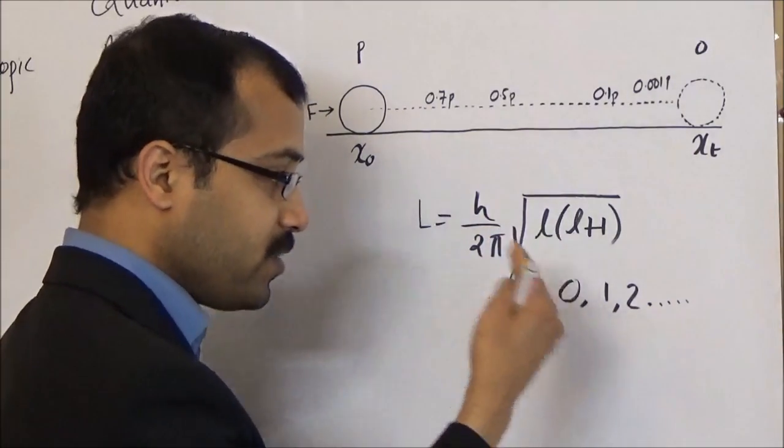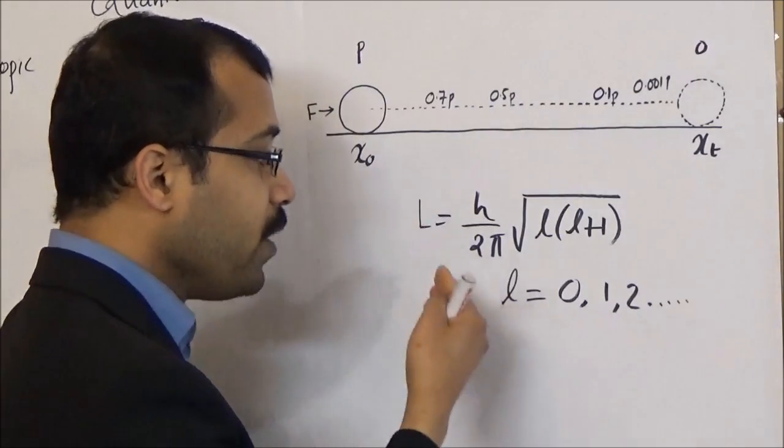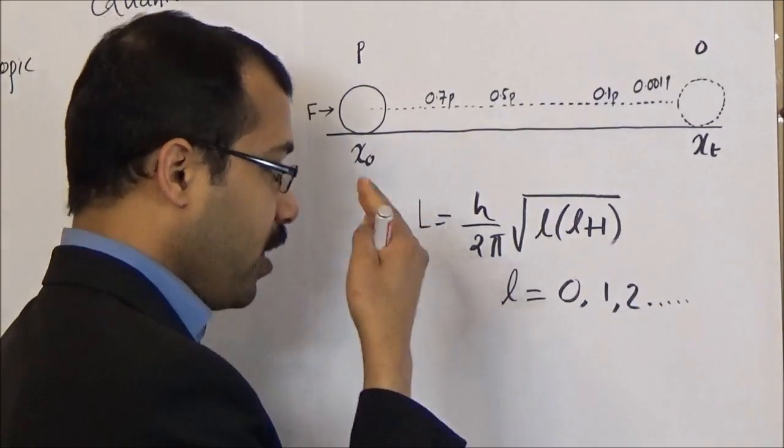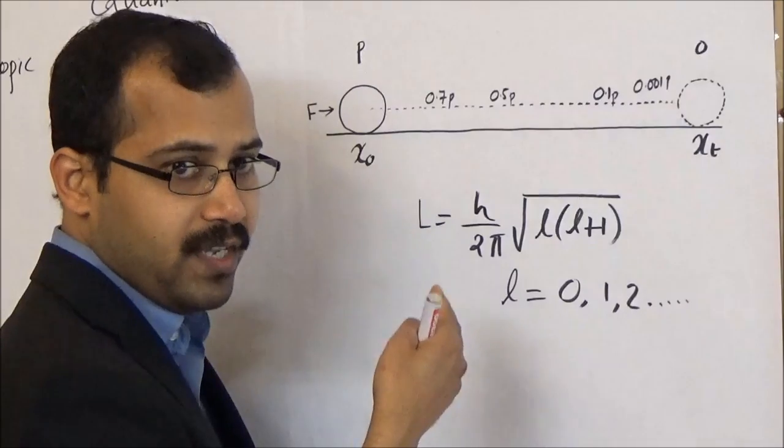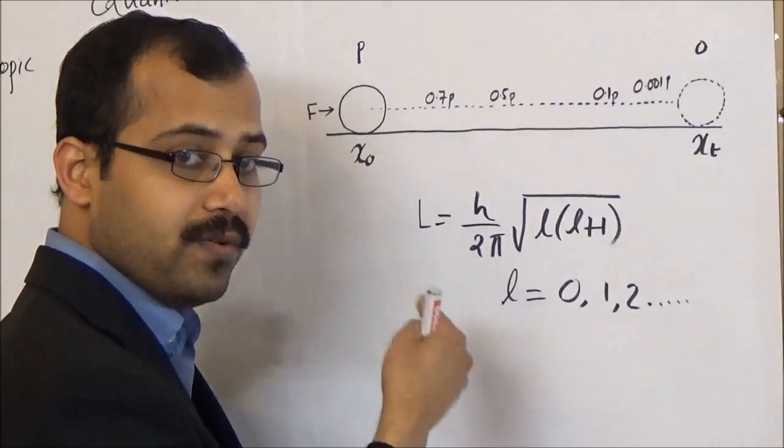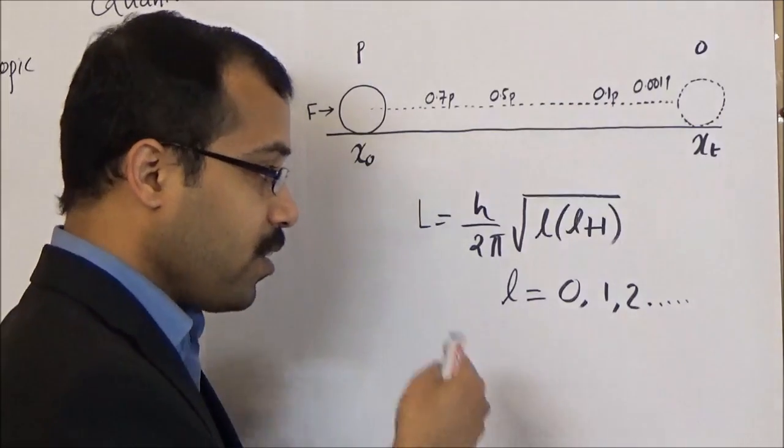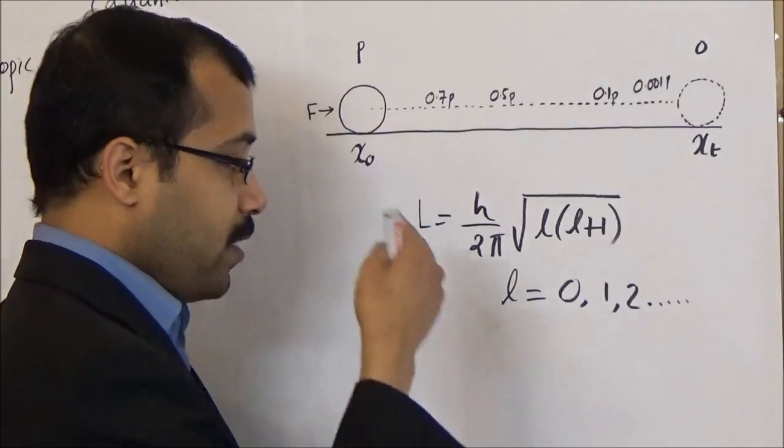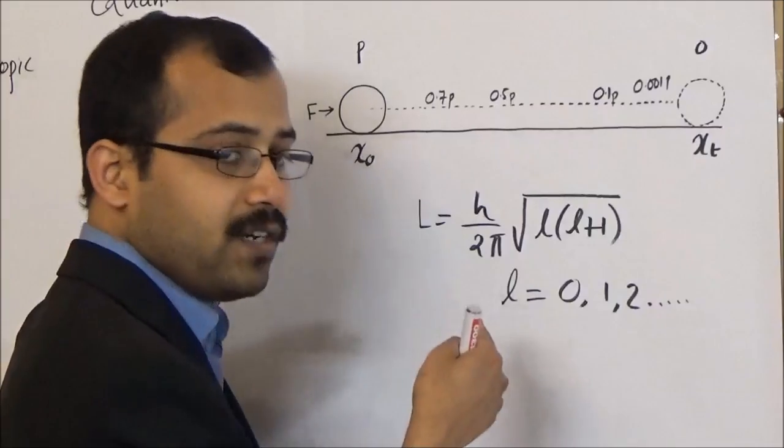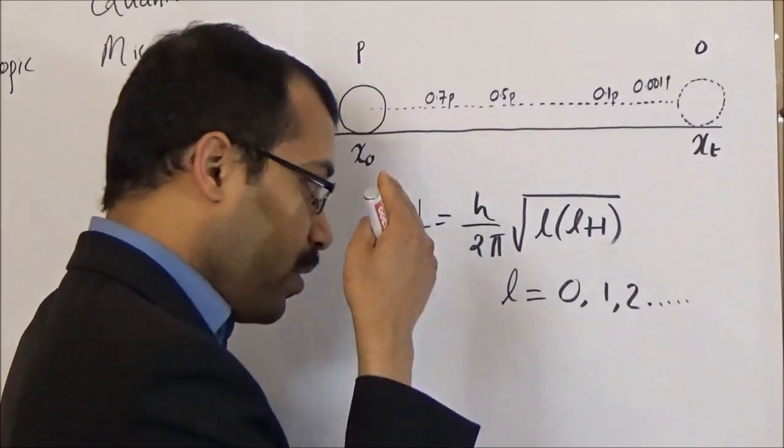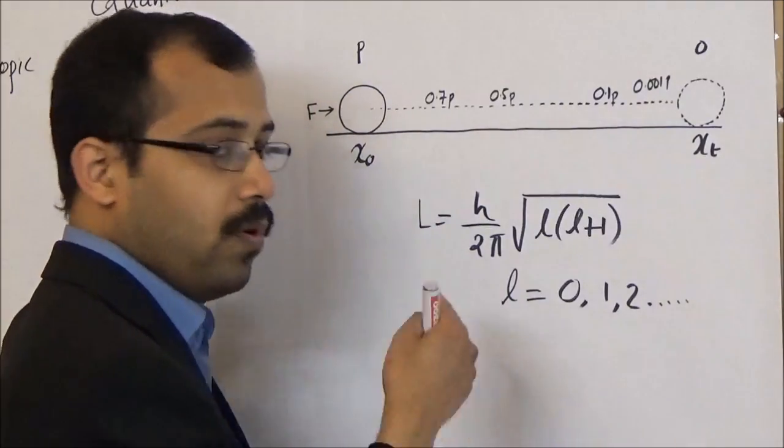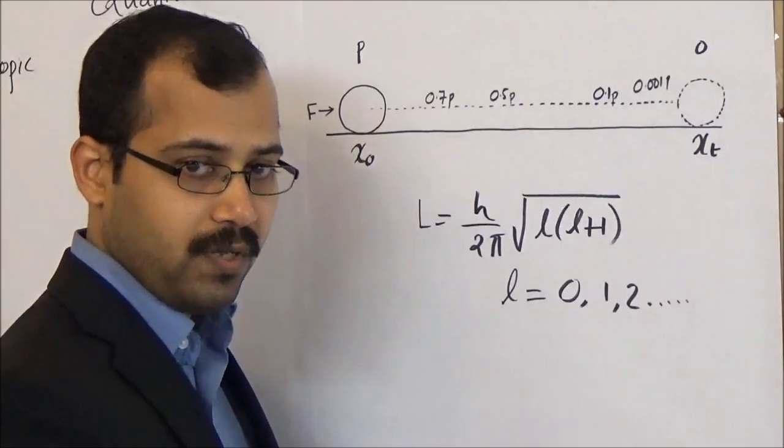The values of L are restricted so the orbital angular momentum are also restricted. Here we cannot have all the continuous range of values of orbital angular momentum. In fact, quantum mechanics allows only restricted values or quantum mechanics allows only discrete values for the variables.